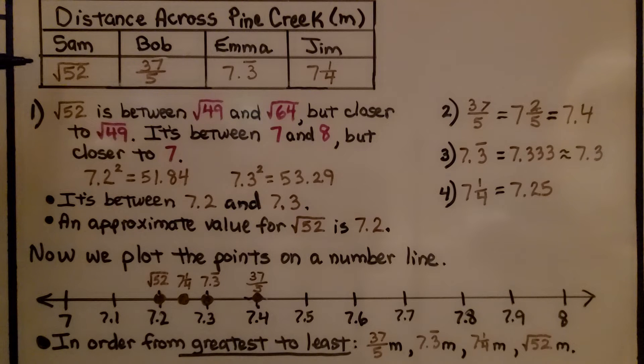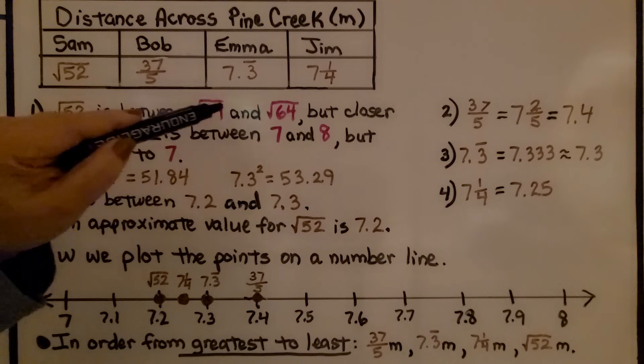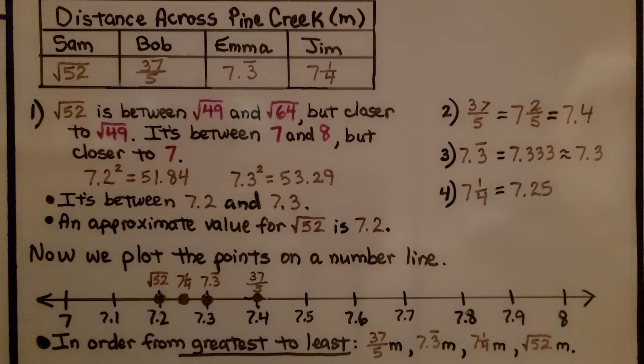We can start with the square root of 52 using perfect squares. The square root of 52 is between the square root of 49 and the square root of 64, but it's closer to the square root of 49. We know it's between 7 and 8, but closer to 7. The square root of 49 is 7, the square root of 64 is 8.